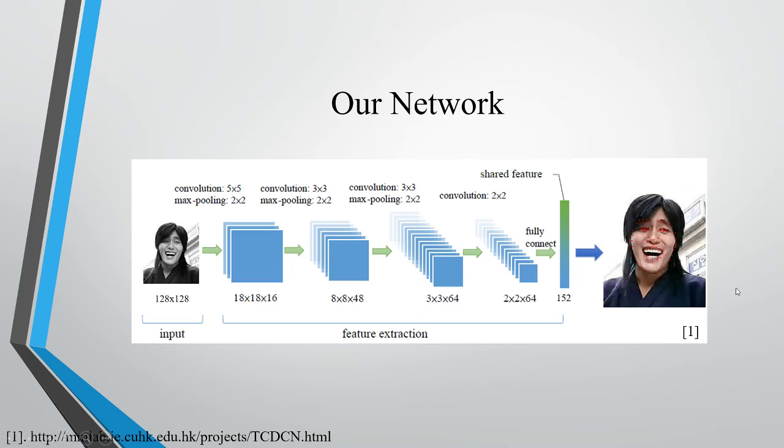This is the illustration of our CNN network. We use four convolutional layers and three max pooling layers. Then, we flatten all the neurons and use a fully connected layer to output a 152 integer, which is the x and y coordinates of the facial landmark.